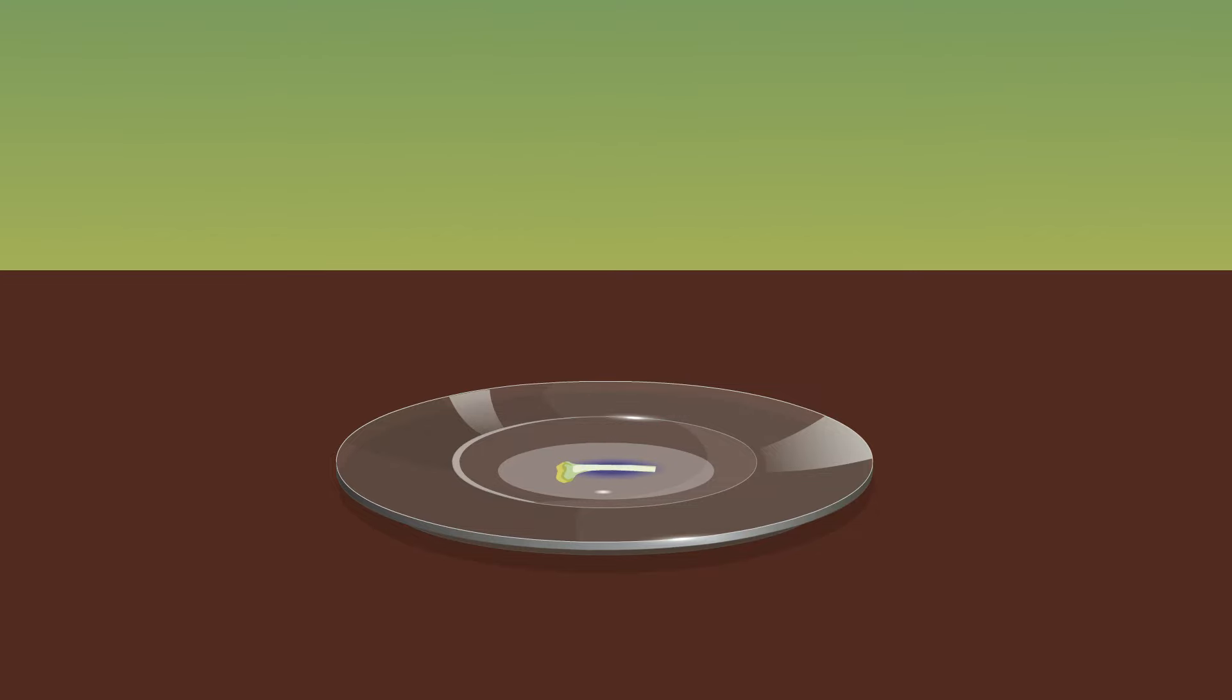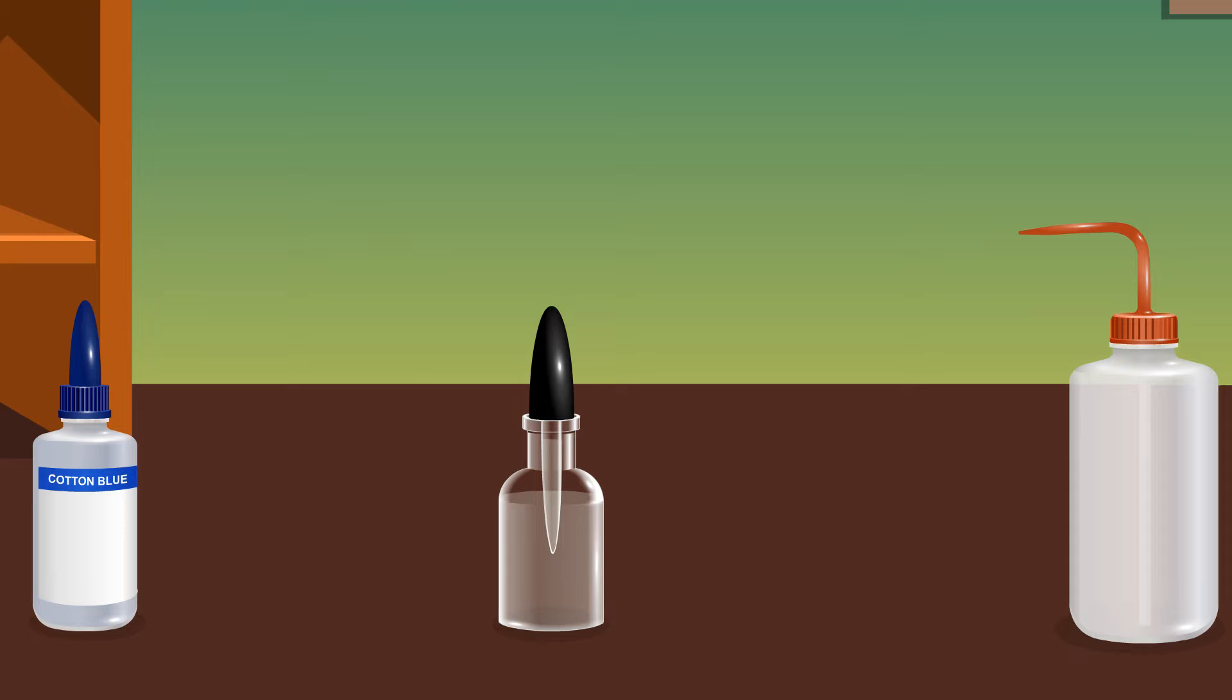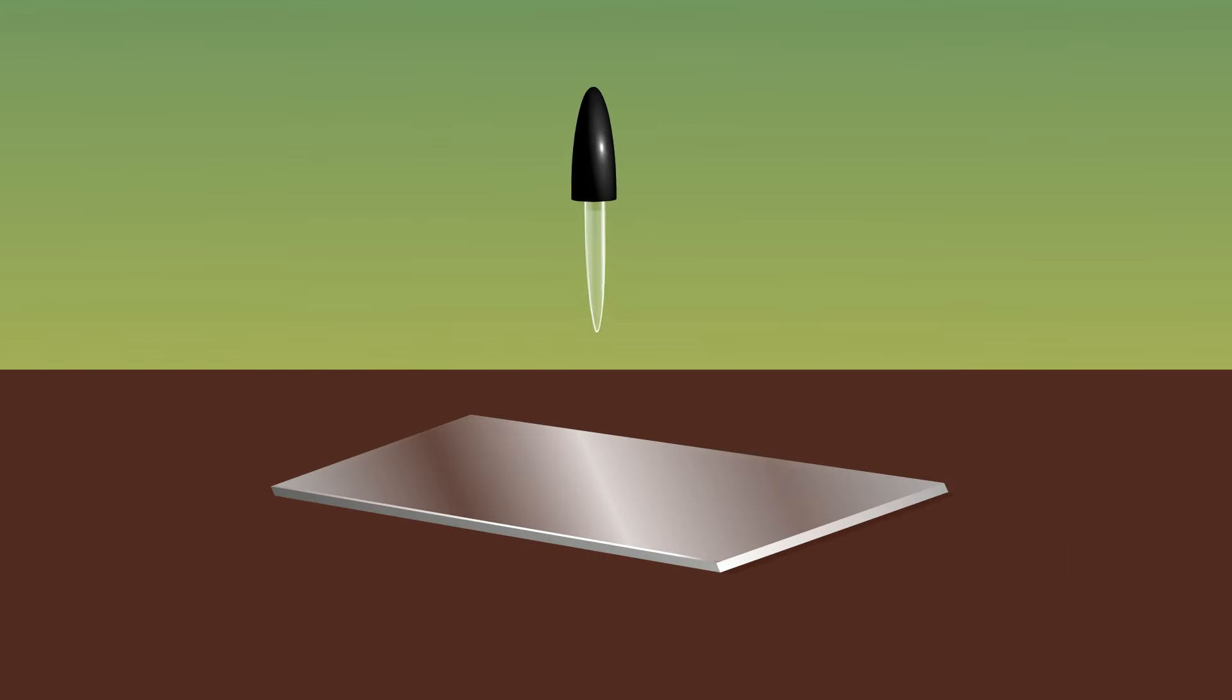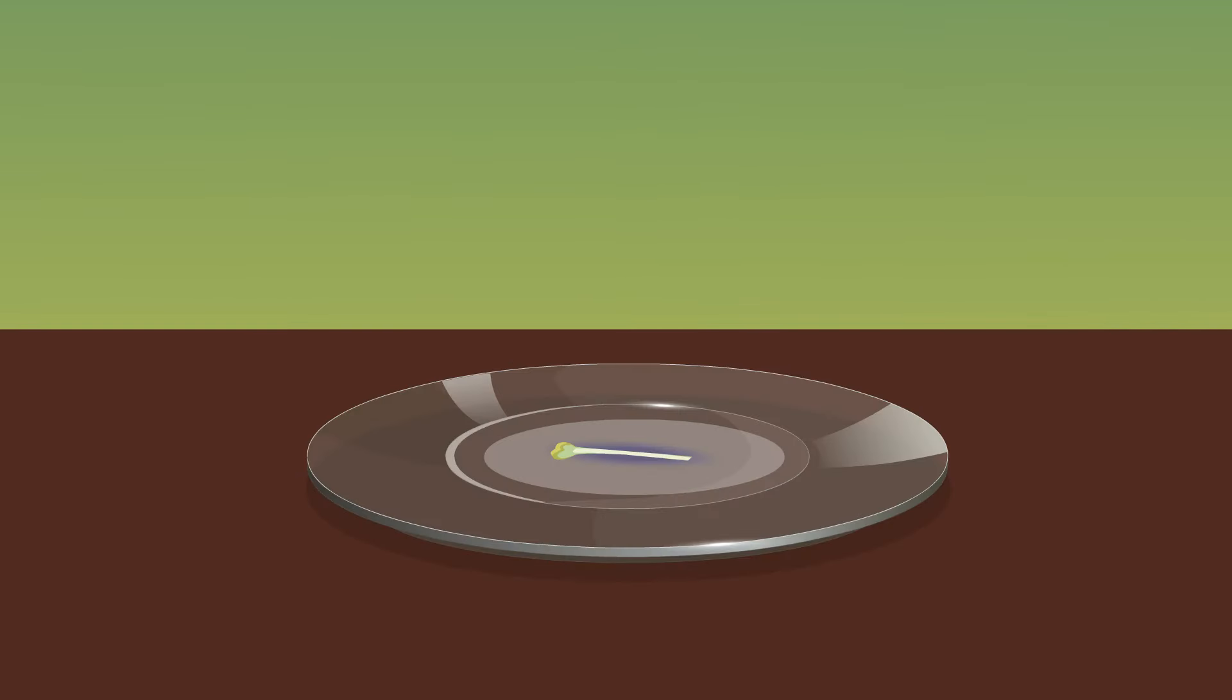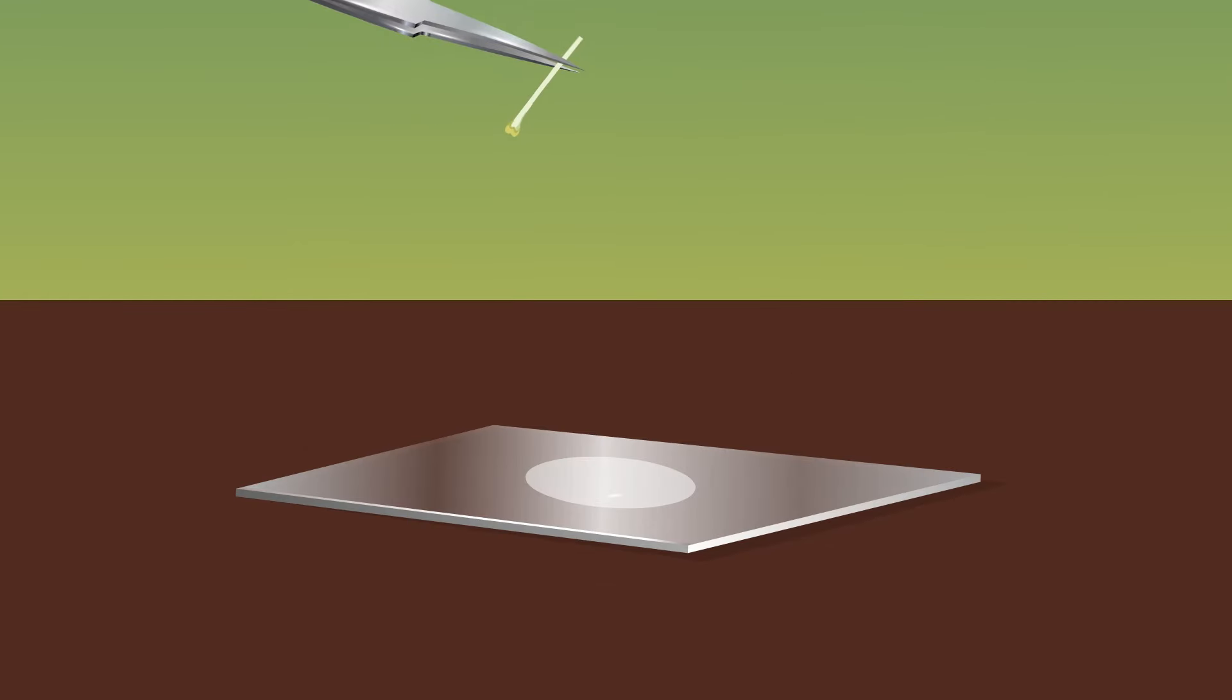Take glycerine in a dropper and pour one drop at the center of a dry glass slide. Using forceps, place the stigma onto the slide containing glycerine.